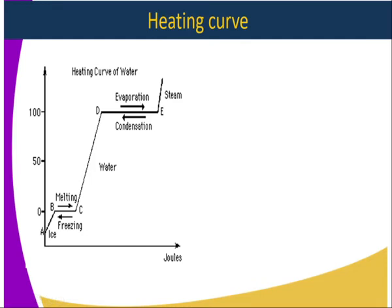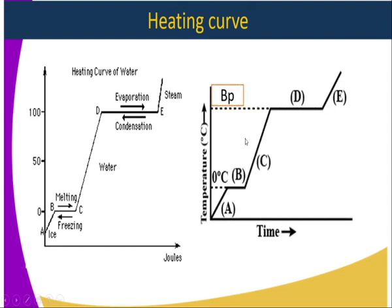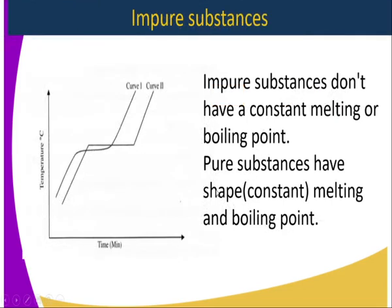On cooling, we obtain the same kind of curve, referred to as a cooling curve. For any other substance, the temperature increases and we observe two constant points — the melting point and the boiling point. To know whether a substance is pure or not using the heating curve: impure substances do not have a constant melting or boiling point — they melt and boil over a range of temperatures. A pure substance has a sharp, constant melting and boiling point.